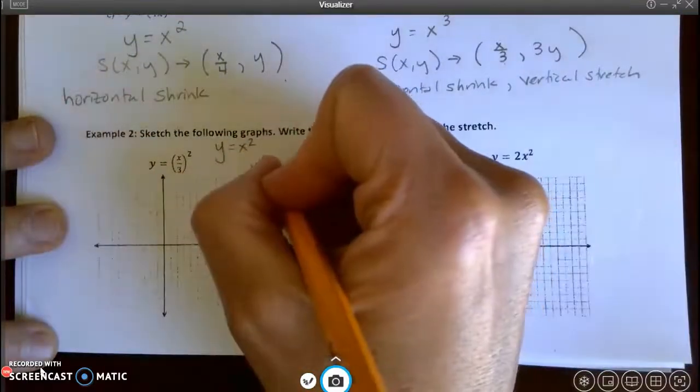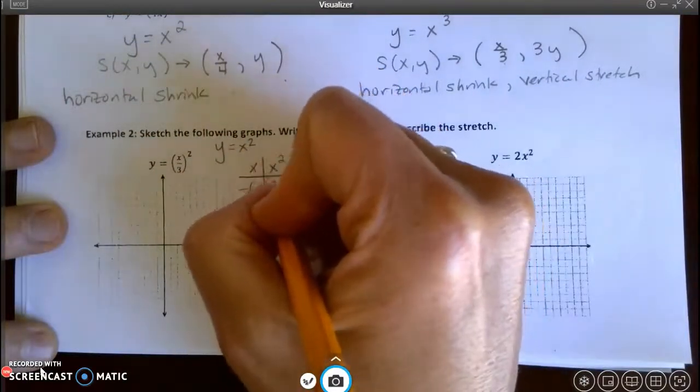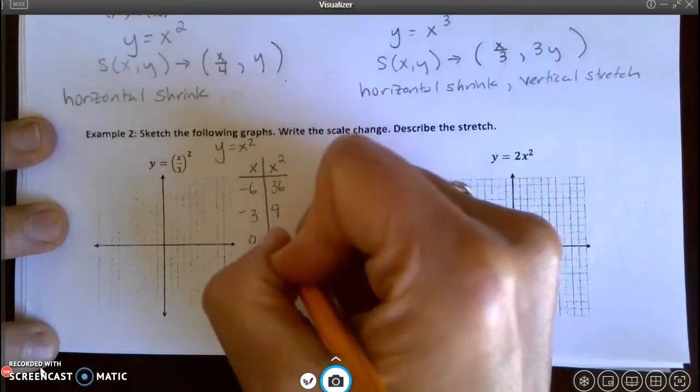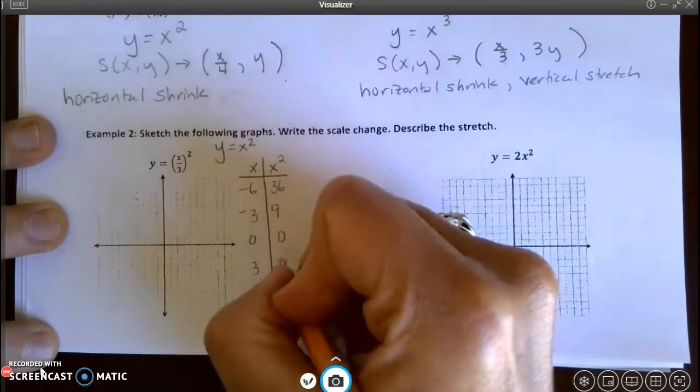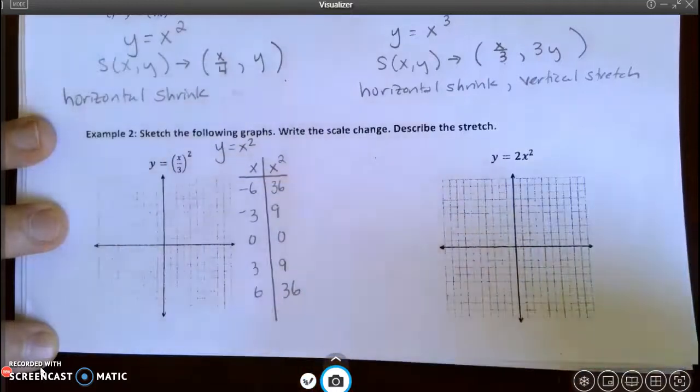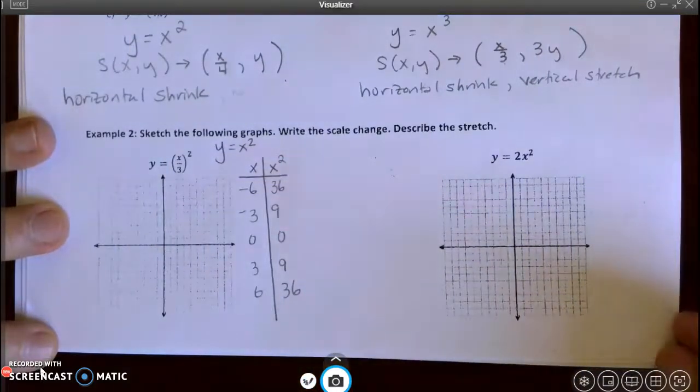And for my x values, I'm going to pick the following. And for my parent function, when I do x squared, I would get 36, 9, 0, 9, and 36. That is my parent function.